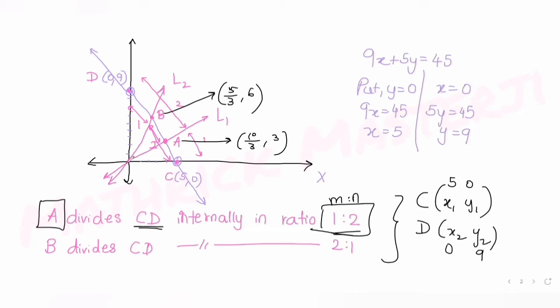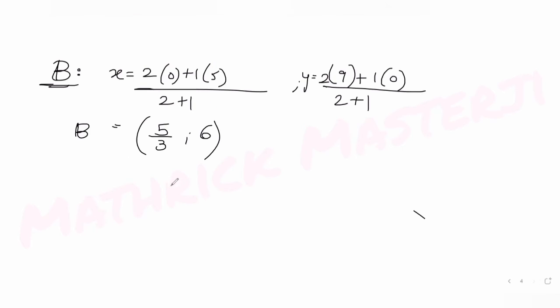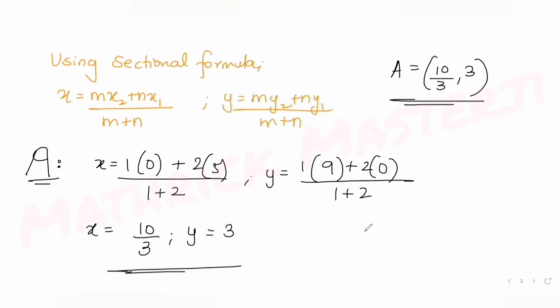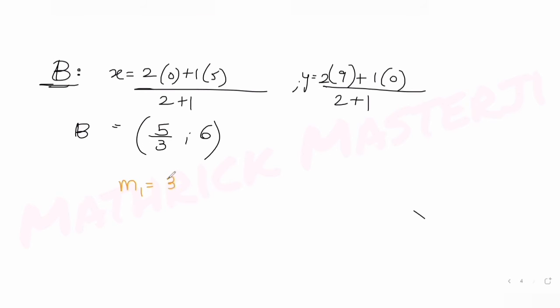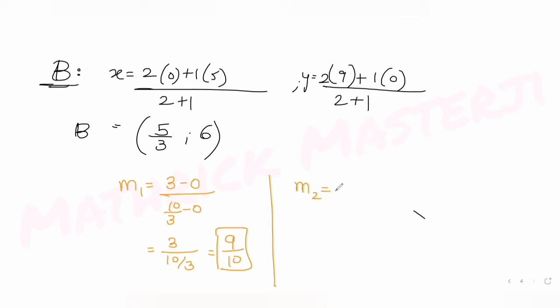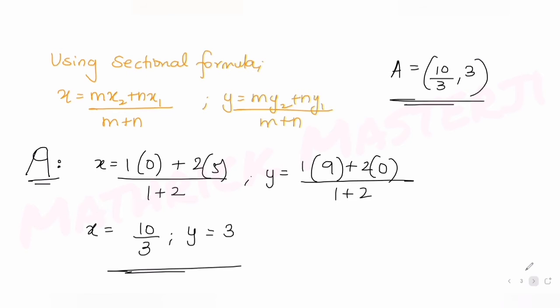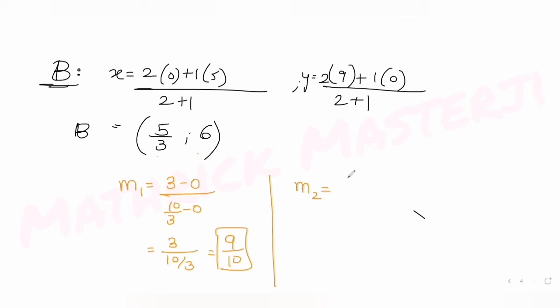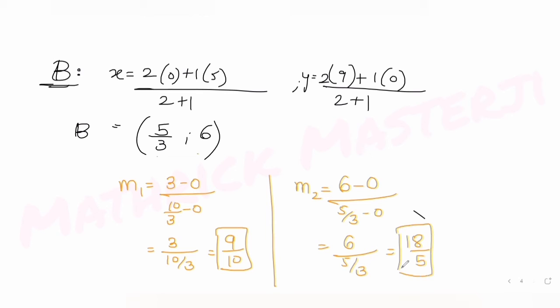Both L1 and L2 pass through the origin (0,0). The slope of L1 using points (0,0) and A = (10/3, 3) is (3 - 0)/(10/3 - 0) = 3/(10/3) = 9/10. The slope of L2 using points (0,0) and B = (5/3, 6) is (6 - 0)/(5/3 - 0) = 6/(5/3) = 18/5.